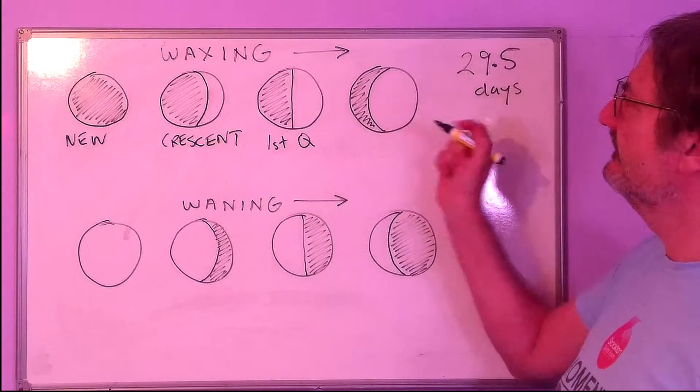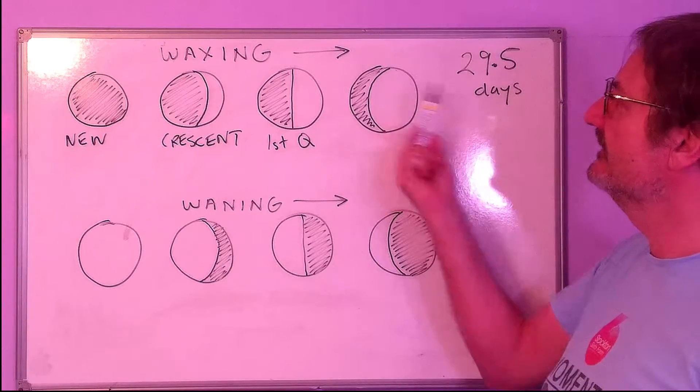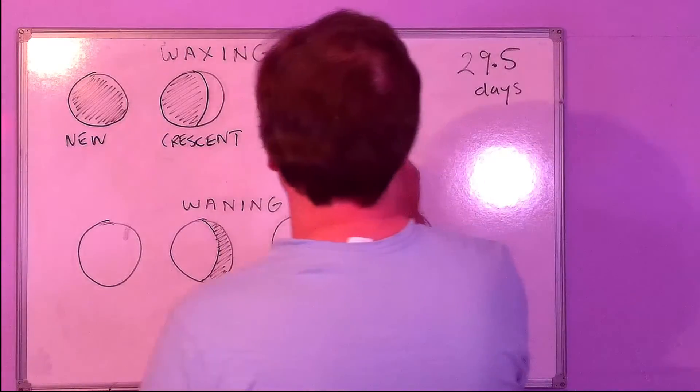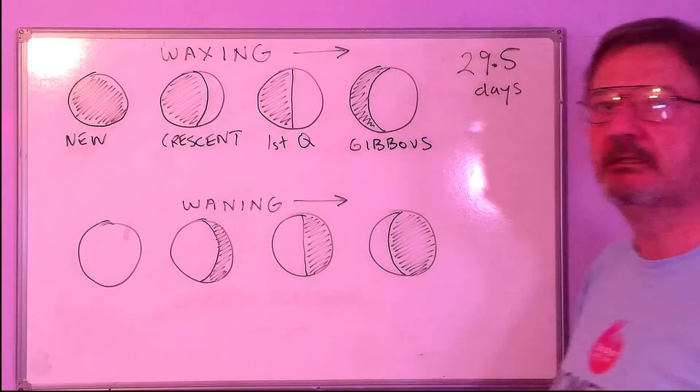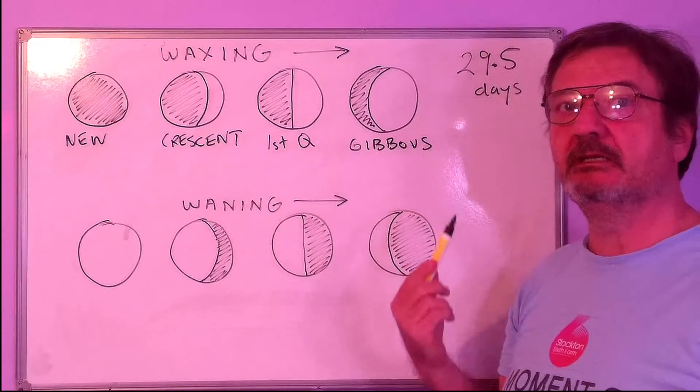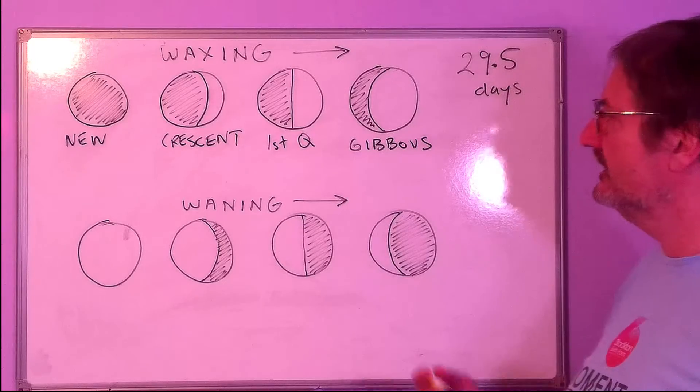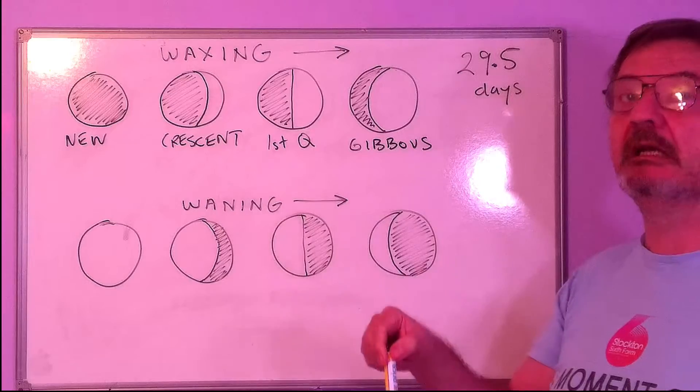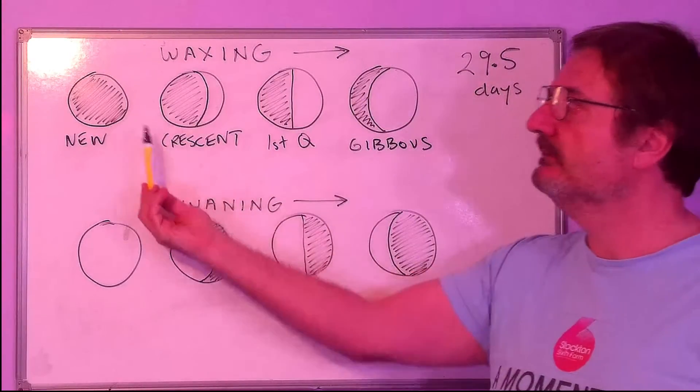After the first quarter, this phase where we can see about three quarters of the face of the moon is called a waxing gibbous. G-I-B-B-O-U-S, a waxing gibbous. The word waxing means getting bigger. An old-fashioned way of making candles is you get a piece of string and you dip it in molten wax again and again, and the candle gets bigger. The word waxing means getting bigger.